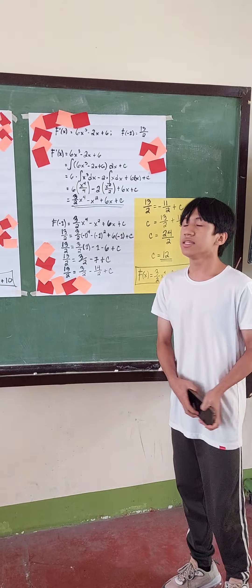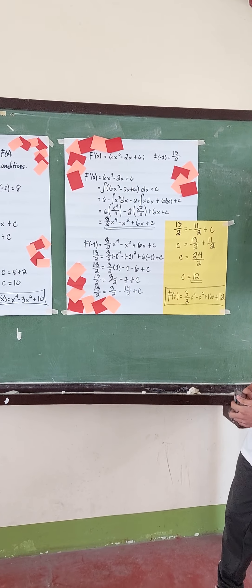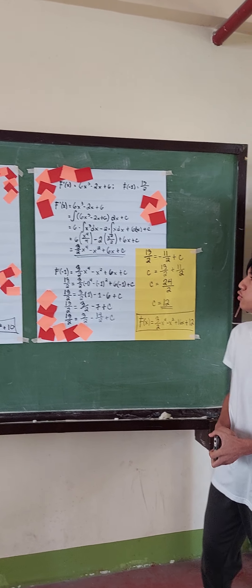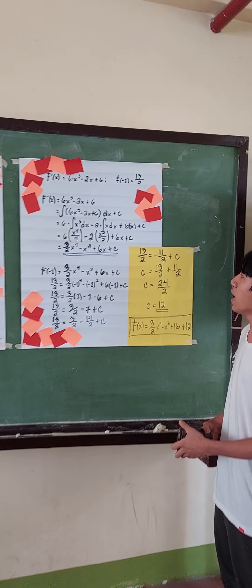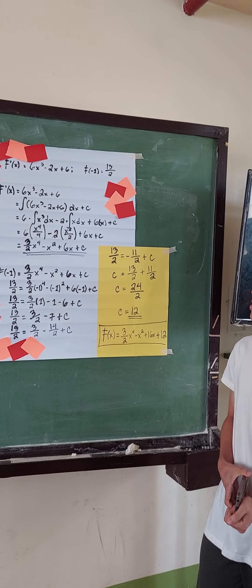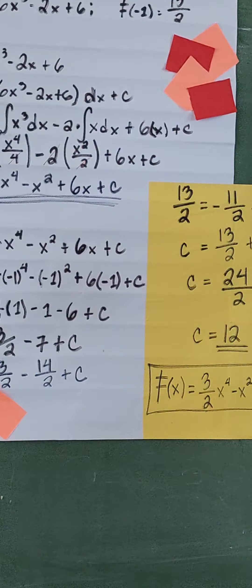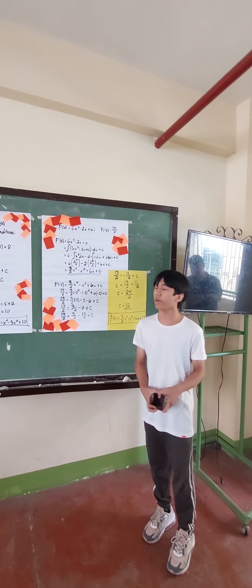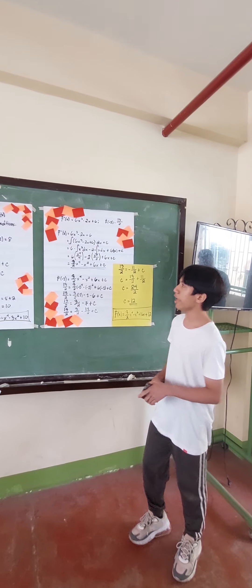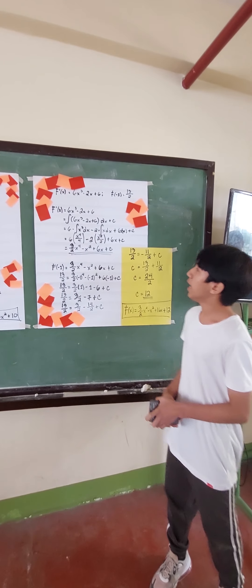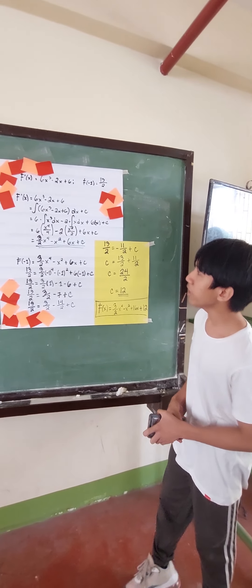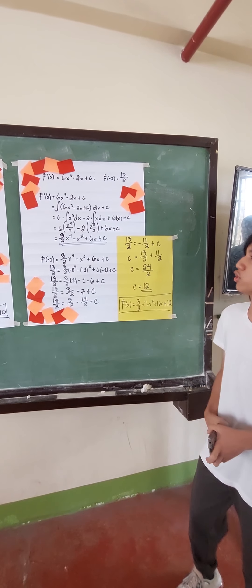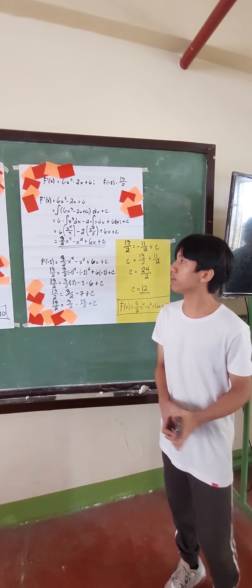So we have 6 times the integral of x cubed dx minus 2 times the integral of x dx plus 6x plus c. The integral of x cubed dx is x to the 4th over 4, and the integral of x dx is x squared over 2 plus 6x plus c.